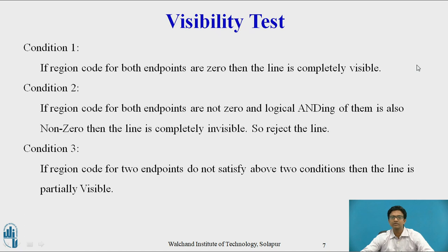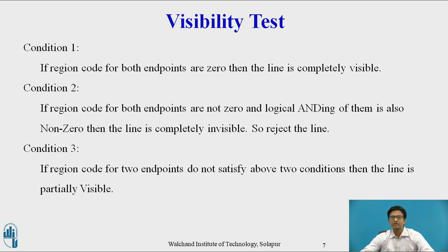In this Visibility Test we have three conditions. Condition 1: if the region code of both endpoints are 0, then the line is completely visible. Condition 2: if the region codes of both endpoints are not 0 and the logical AND of them is also non-zero, then the line is completely invisible, so we can reject the line. Condition 3: if the region codes of the two endpoints do not satisfy the above two conditions, then the line is partially visible.